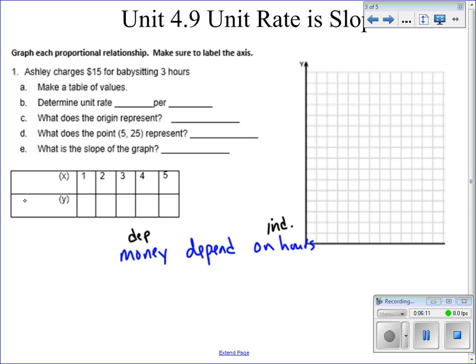Our dependent variable is always our Y, and so I'm going to write in money here. Our independent variable is always our X, and so I'm going to write hours here.